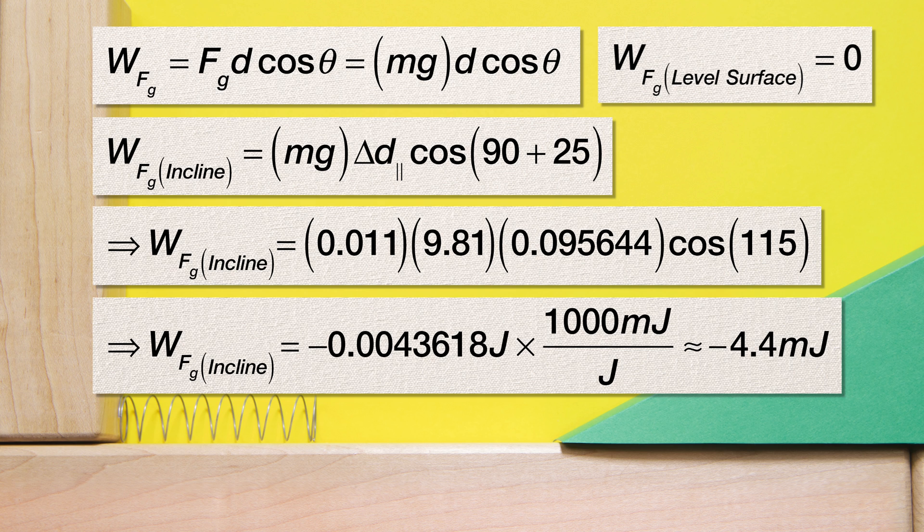The work done by the force of gravity as the block slides from compressing the spring to its maximum height on the incline is negative 4.4 millijoules. Thank you very much for learning with me today. I enjoyed learning with you.